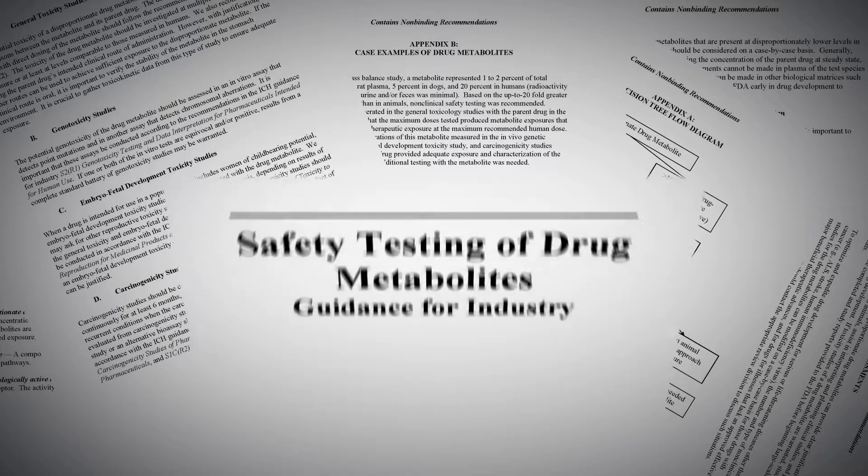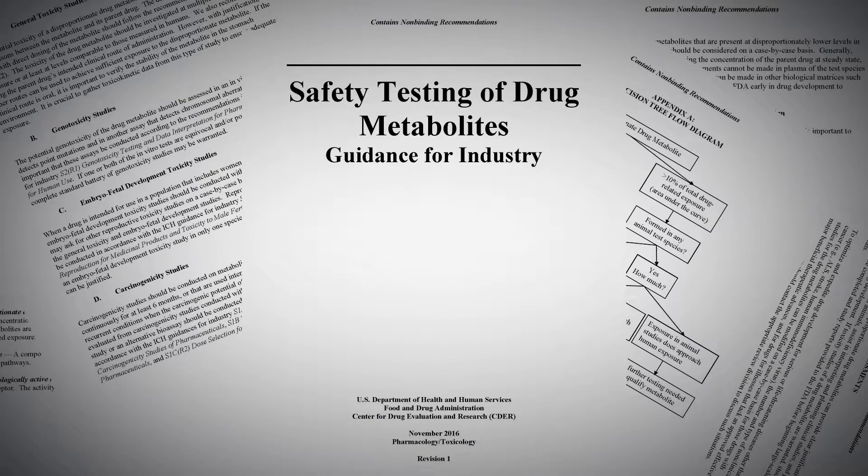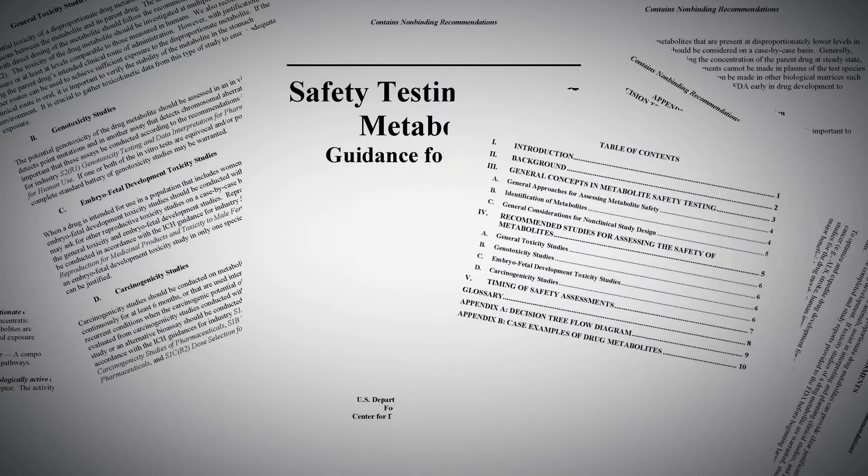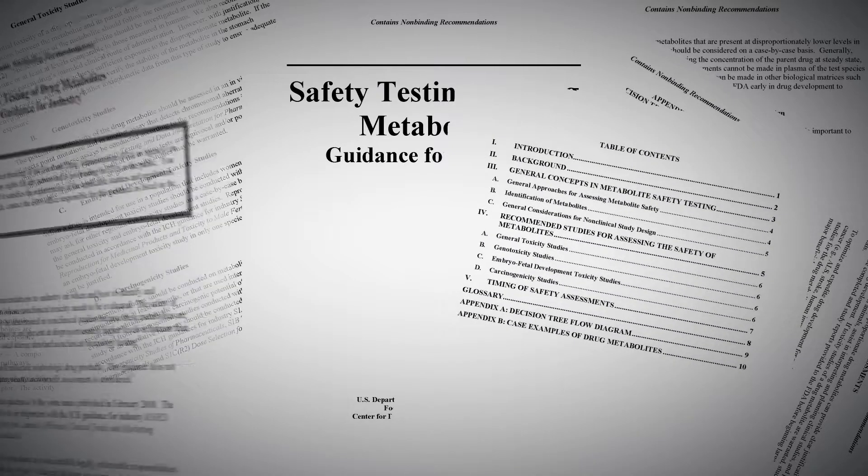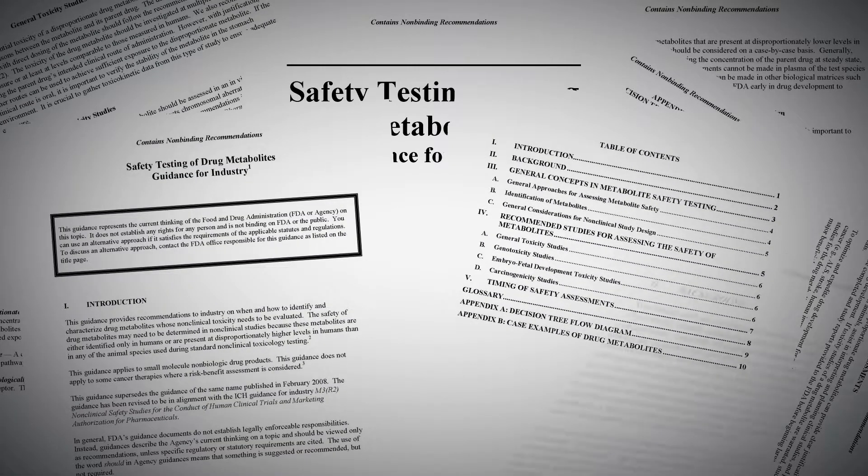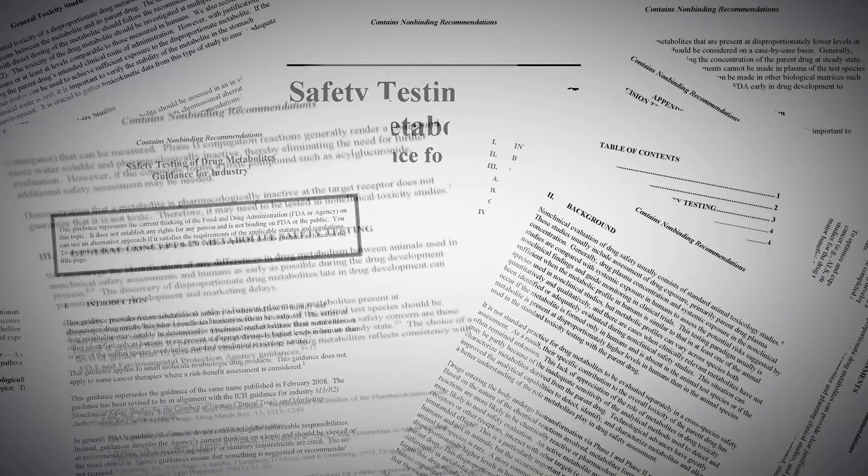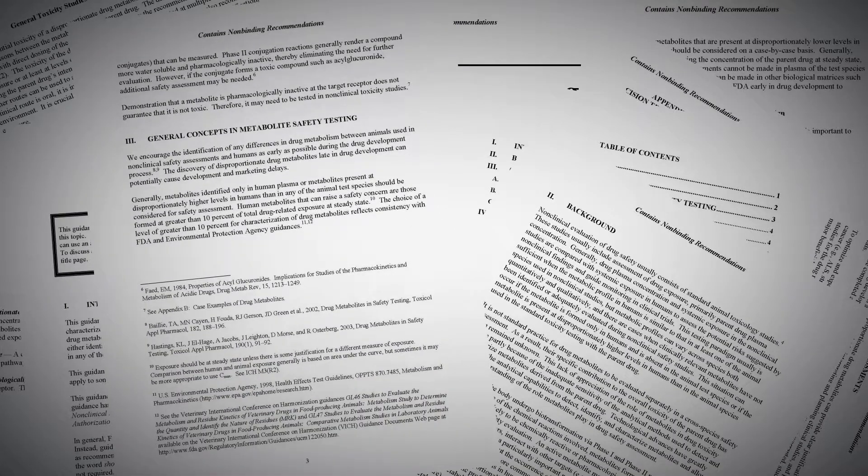One of the major requirements for developing a drug is ensuring that it is safe for humans. To assist drug developers, the FDA has provided a guidance for industry on safety testing of drug metabolites. Being able to identify metabolites early on can minimize the risk of delaying development and marketing plans.